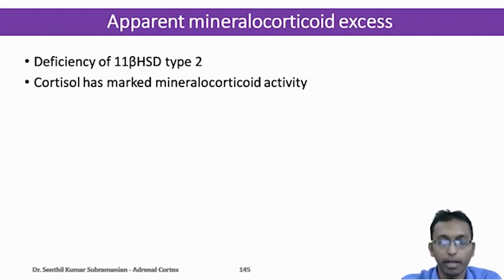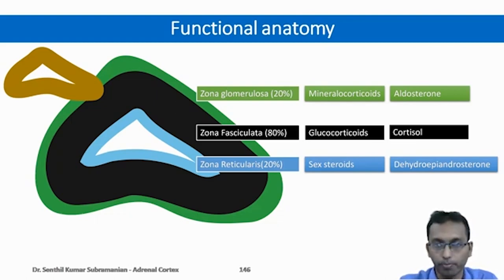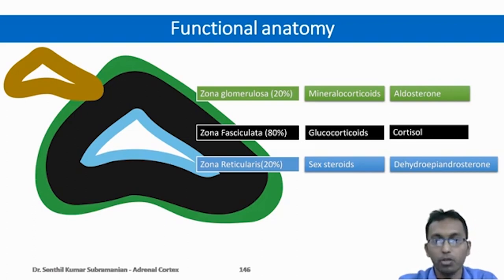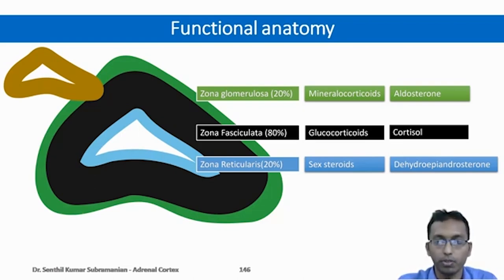To summarize: the adrenal cortex plays an important role in resisting stress. It has three layers — zona glomerulosa, zona fasciculata, and zona reticularis — each with separate functions. Zona glomerulosa secretes aldosterone, which has its main action on potassium balance and plays an important role in ECF volume maintenance. Zona fasciculata secretes cortisol, which plays an important role in maintaining fuel supply to vital organs such as the brain and heart during stressful conditions. Zona reticularis secretes sex steroids, whose physiological importance is based on their peripheral conversion. Thank you.